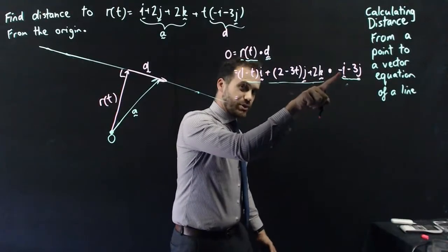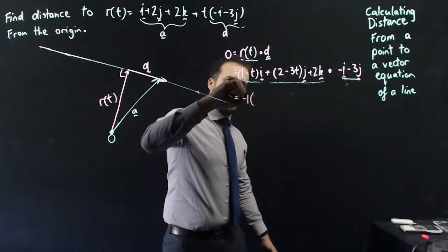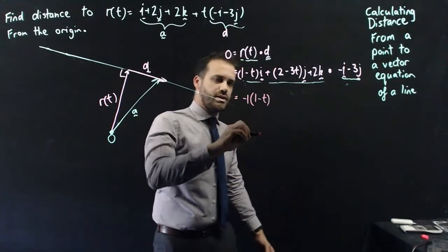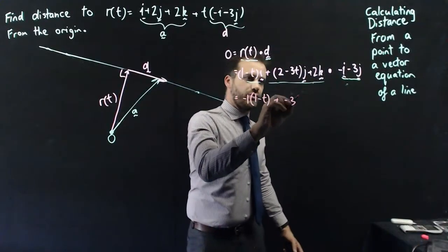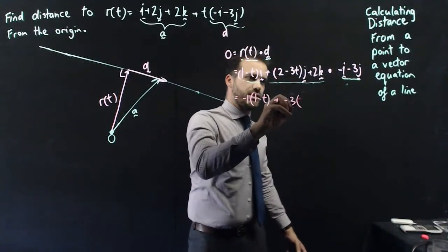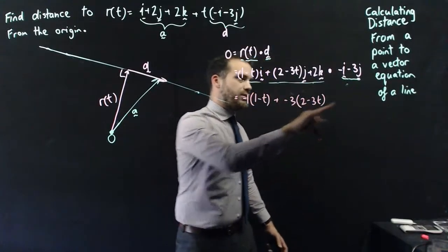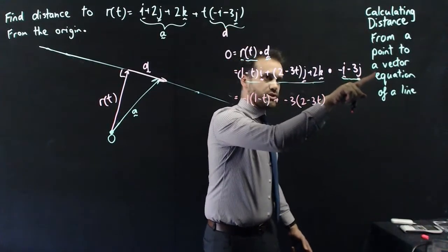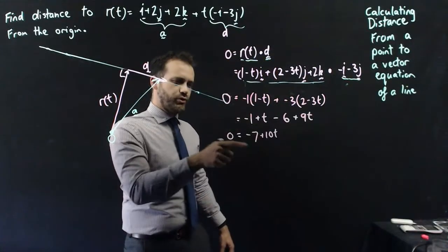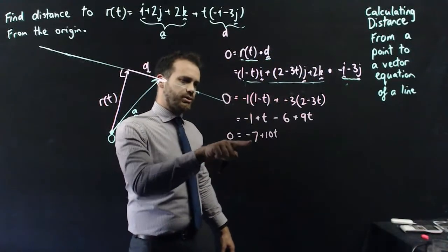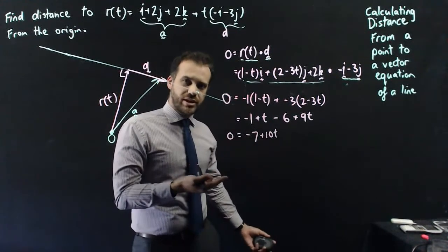It's negative 1 times (1 minus t), adding negative 3 multiplied by (2 minus 3t), and 0 times 2 which is 0. After simplifying, we find that 0 equals negative 7 plus 10t. Rearranging that gives us a value for t.